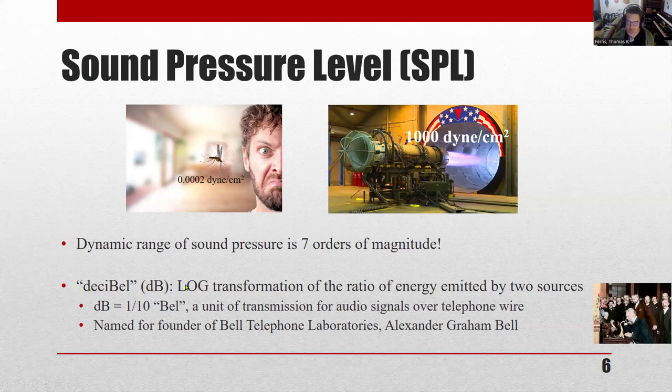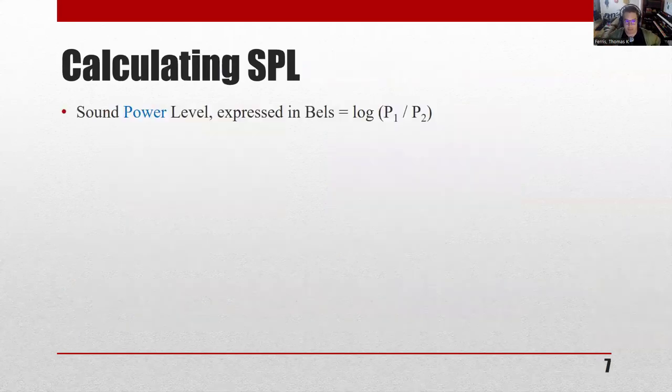And so we also, because we had these seven orders of magnitude in order to make it a little more workable, we did log. Alexander Graham Bell and his homies at Bell Labs, not Taco Bell, Alexander Graham Bell of Bell Labs became AT&T Bell Labs became AT&T and now charges you too much in your cell phone bill. But also his name was lent to a unit called a Bell, a B-E-L, and I will show you what that looks like, but it's basically a log transformation of a ratio of emitted energies.